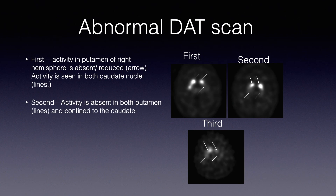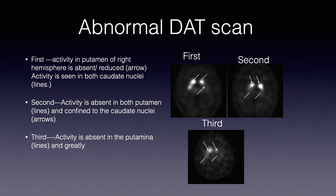In the third image, activity is absent in both the putamen, as shown by the lines, and greatly reduced in the caudate nuclei, as shown by the arrows. The activity is absent in both the putamen.